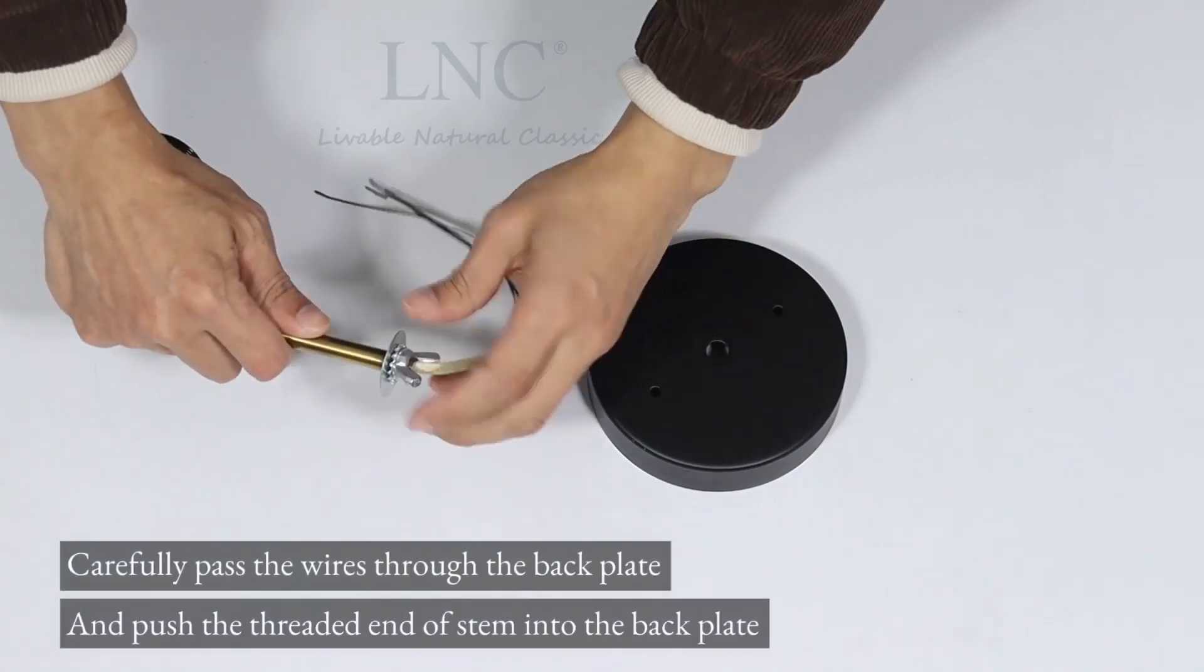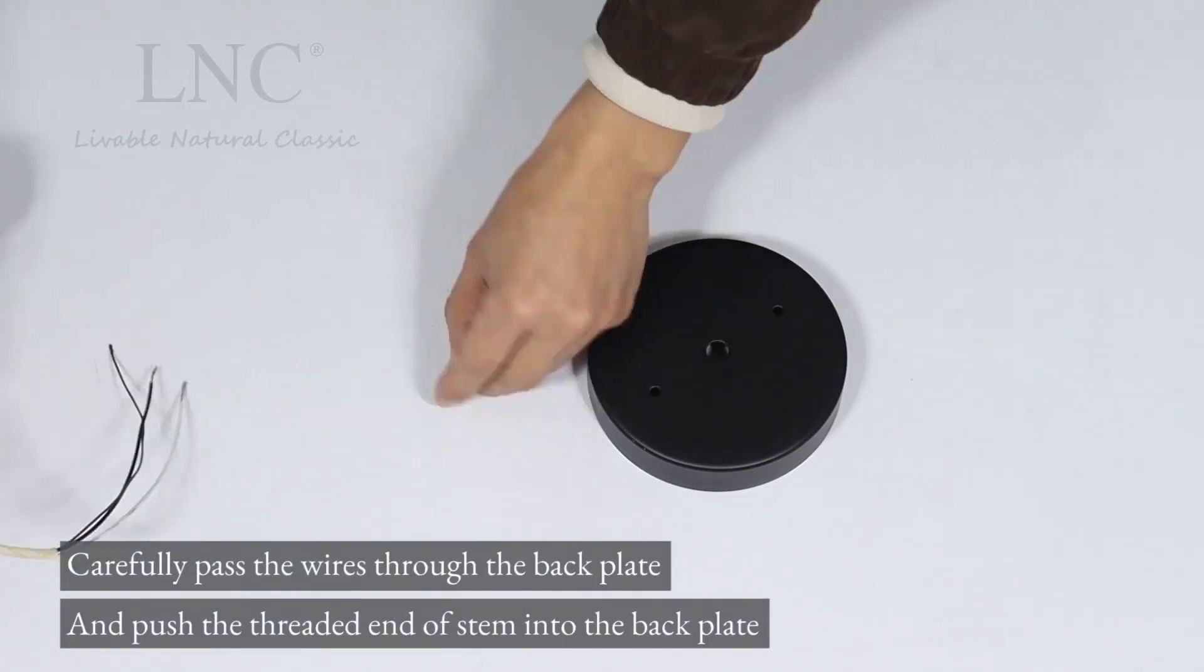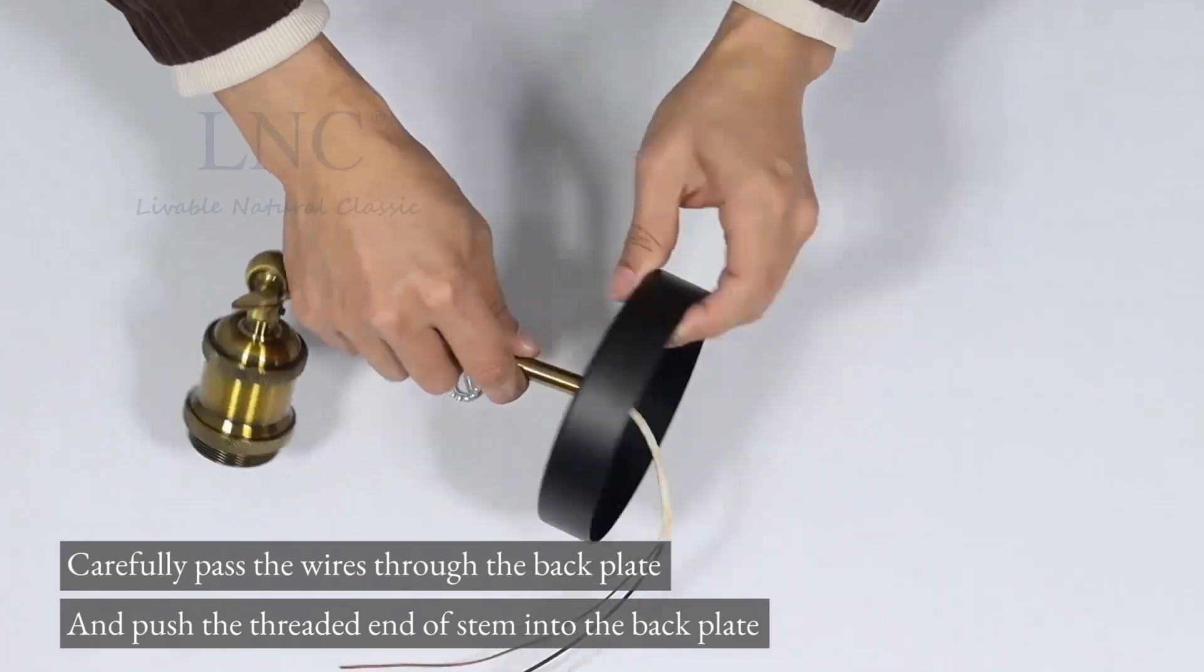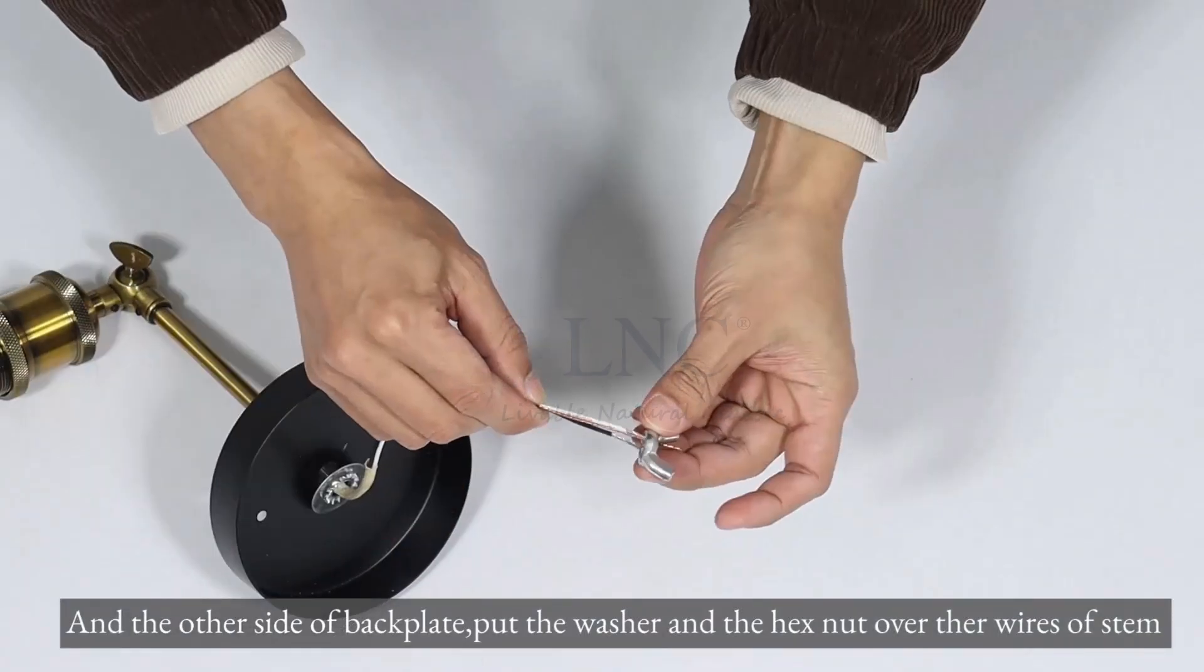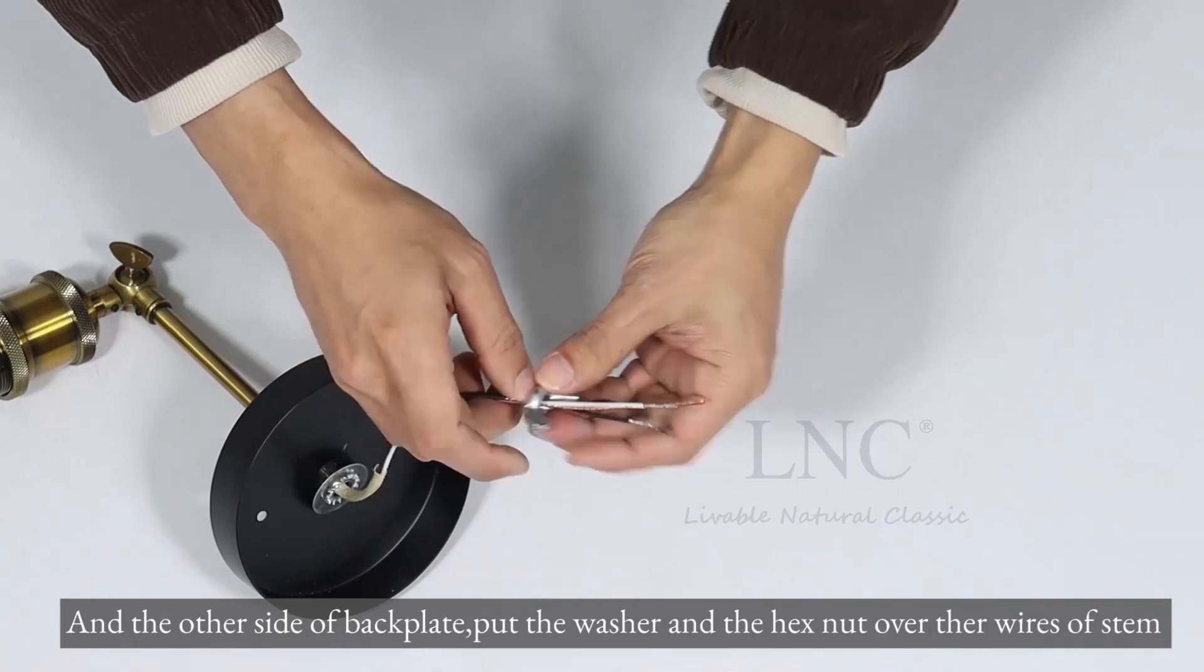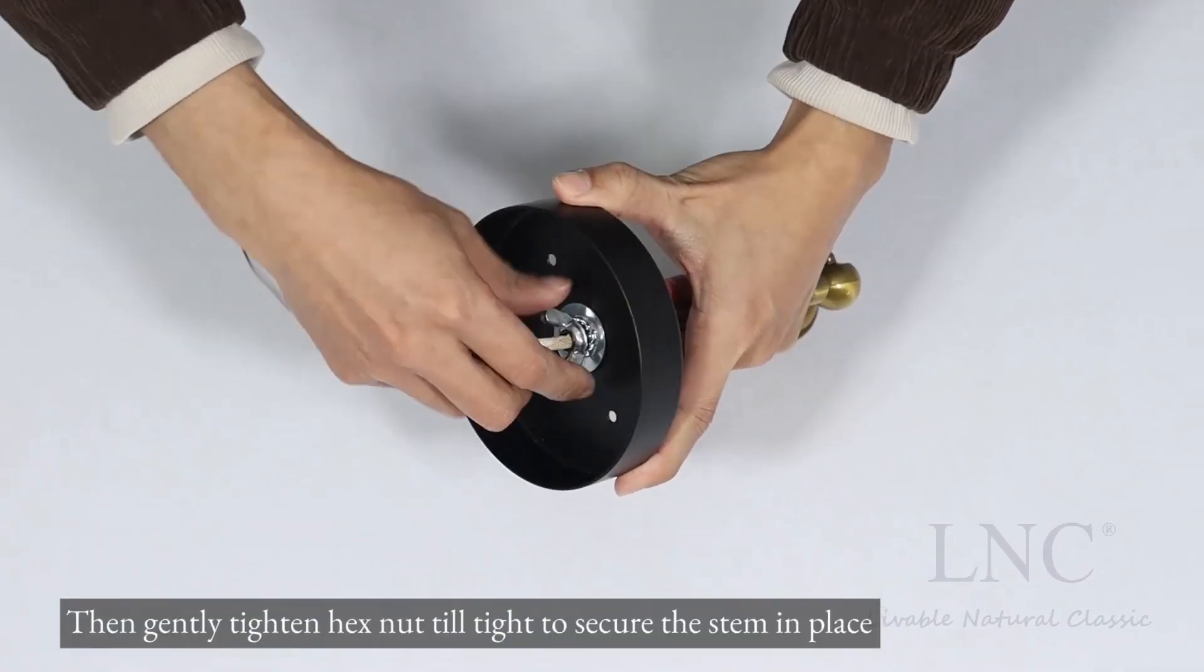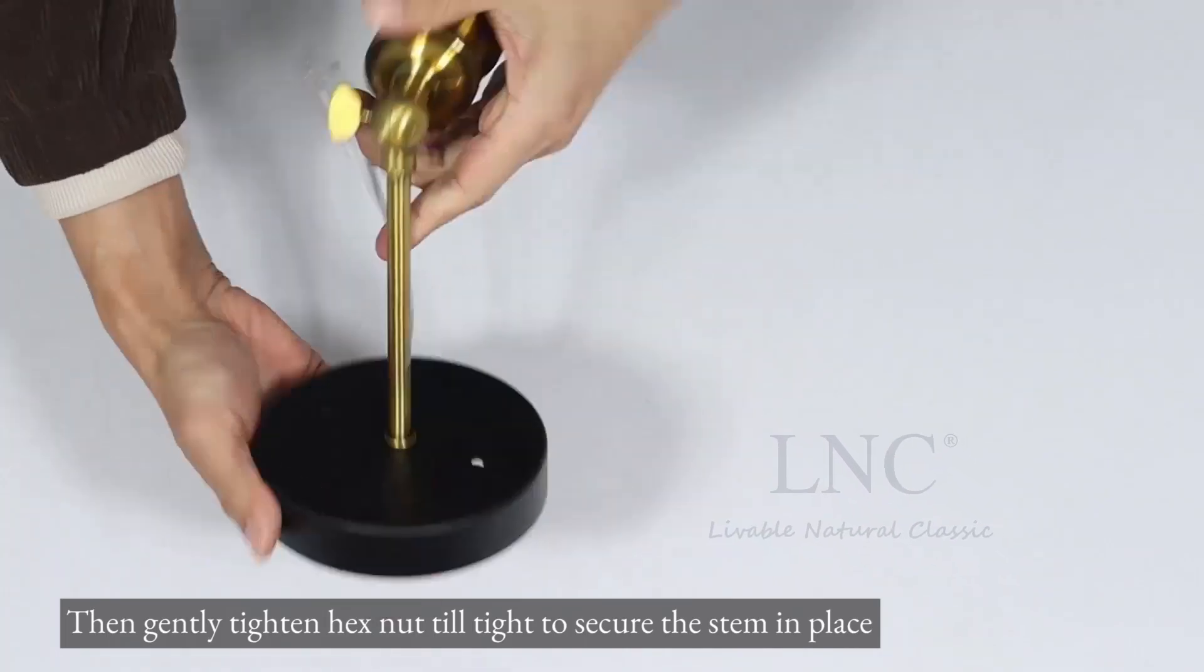Carefully pass the wires through the back plate, and push the threaded end of stem into the back plate. On the other side of back plate, put the washer and the hex nut over the wires of stem. Then gently tighten hex nut until tight to secure the stem in place.